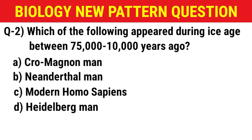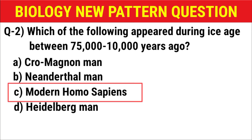Next question: Which of the following appeared during the period between 75,000 to 10,000 years ago? Options: (A) Cro-Magnon man, (B) Neanderthal man, (C) modern Homo sapiens, (D) Heidelberg man. The correct answer is option C: modern Homo sapiens.